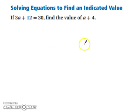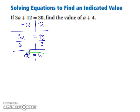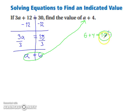Let's try one more together. We have 3a plus 12 equals 30 — find the value of a plus 4. To do this, figure out what a is first. Pause the video and solve for a. A equals 6. Once you have a, substitute it in to find the value of a plus 4: 6 plus 4 gives you 10. If you have any questions, ask your teacher. This ends our lesson on solving two-step and multi-step equations. Thanks.